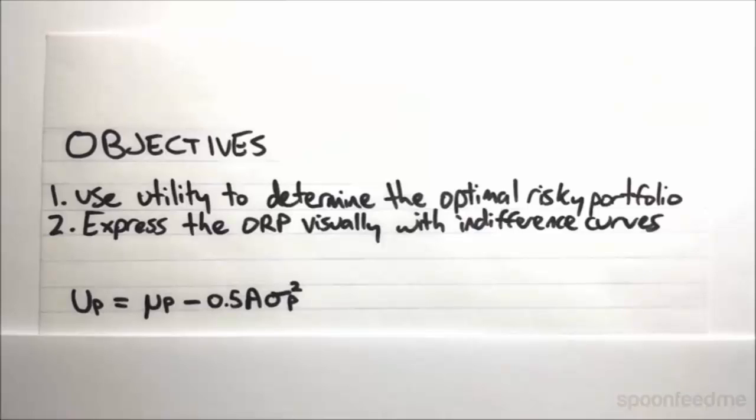And so we assume that everyone pretty much hates risk, but in different amounts. The idea with this utility theory here, is that when we talk about an optimal risky portfolio, there isn't one that is suitable for everyone. There isn't a one size fits all. Every investor is assumed to be different, and every investor has their own optimal risky portfolio, based on their own degree of risk aversion.